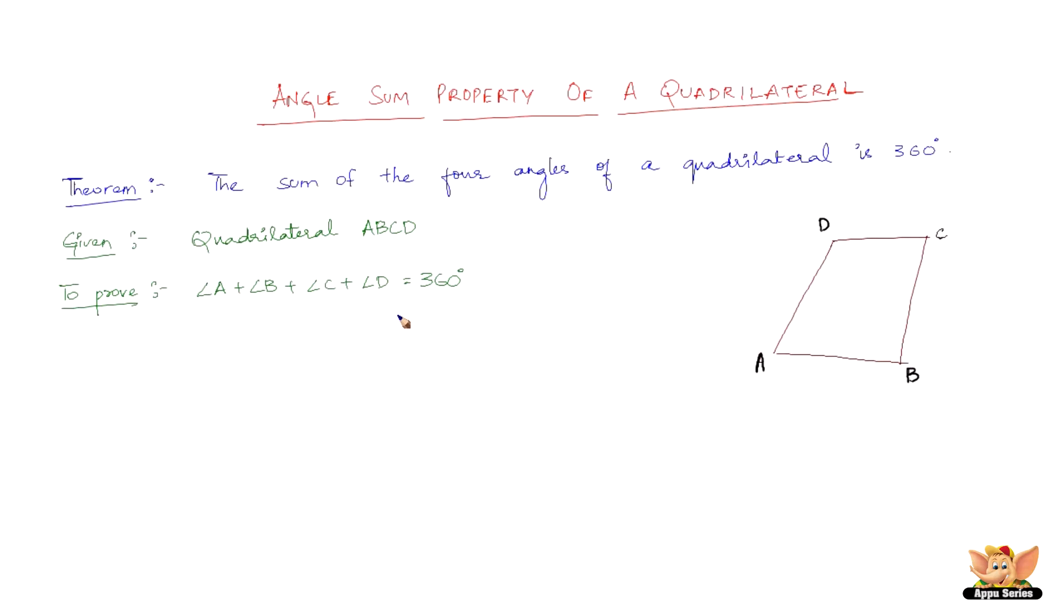Now we need to do a construction to go ahead to the proof. So the construction here is we need to join AC and then the angles formed would be this, this, this one, this one, this one and this one.